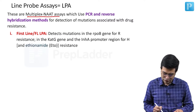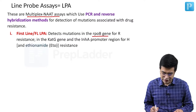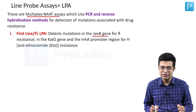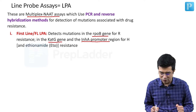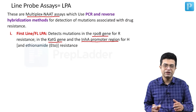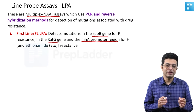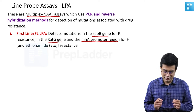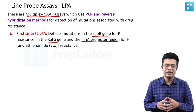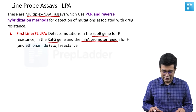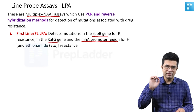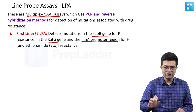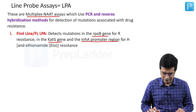FL-LPA will detect mutations in the rpoB gene, which is responsible for rifampicin resistance. It will also detect mutations in the katG gene and inhA promoter region, which are involved in isoniazid resistance and are also implicated in ethionamide resistance. So resistance to H (isoniazid) and R (rifampicin) will be checked by first-line LPA.